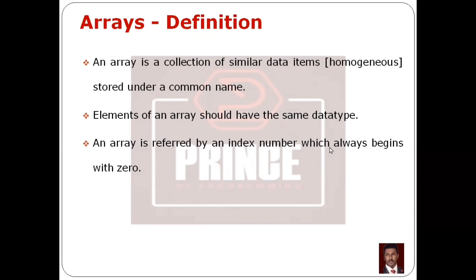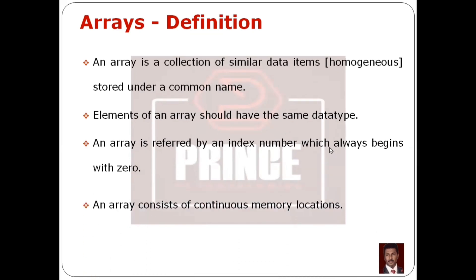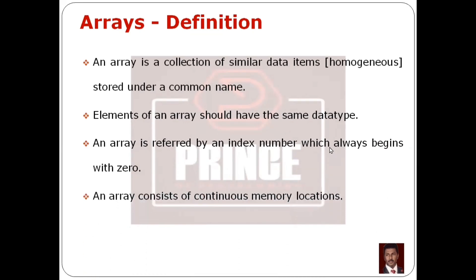The index number always begins with 0. So if we have an array, the first position has index number 0. An array consists of continuous memory locations. Array has a data structure with memory locations, and we can store a value in each location.